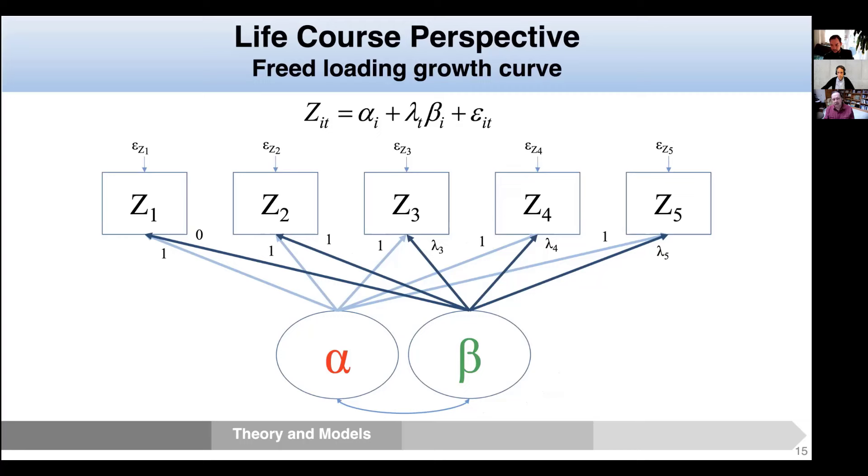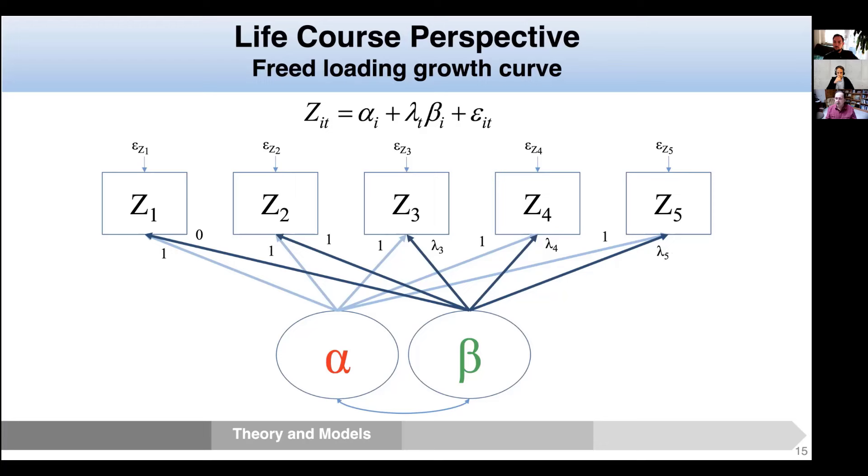This is another form of curvilinearity you could have. This is with a free-loading growth curve model, where rather than having the growth curve be just a set linear trend, we could just say that the random slope, first coefficient is zero, the second coefficient is one, but then estimate lambda-3, lambda-4, lambda-5 for the remaining three waves to give a little more flexibility on the shape of the curve that's being followed. This can be helpful when you don't have a smooth quadratic type shape of change. It is another form of a curvilinear model, but it still is consistent with a life course perspective.